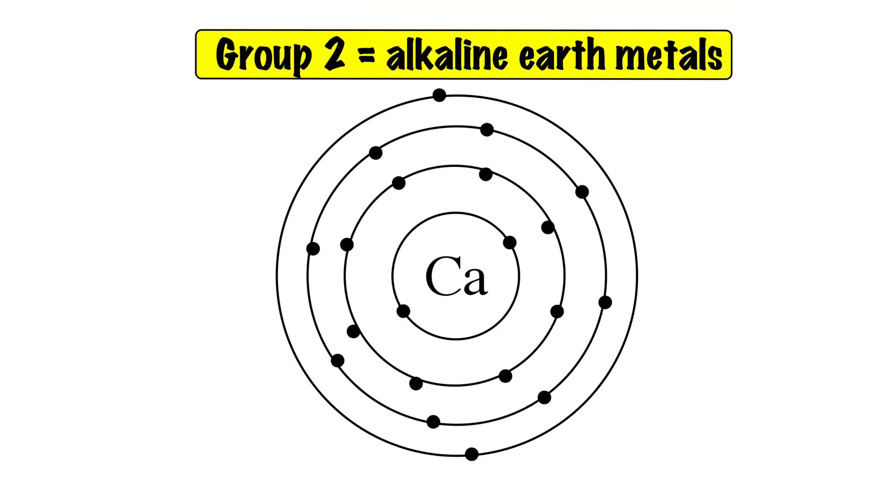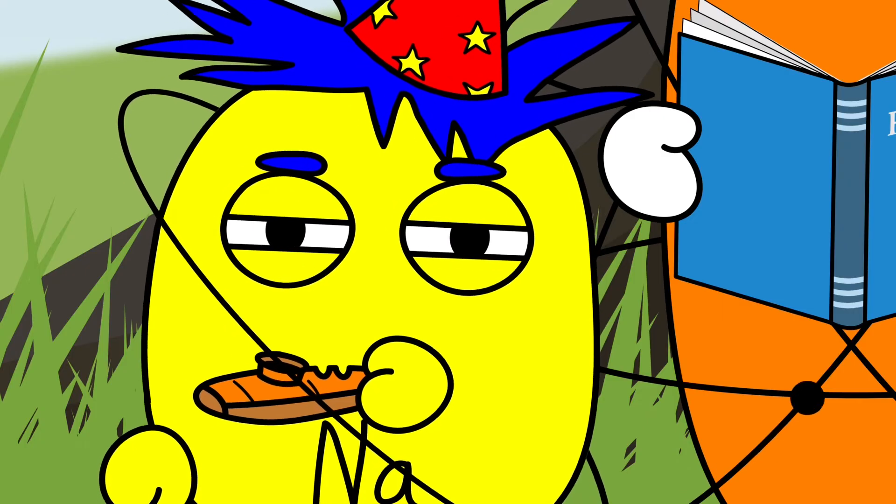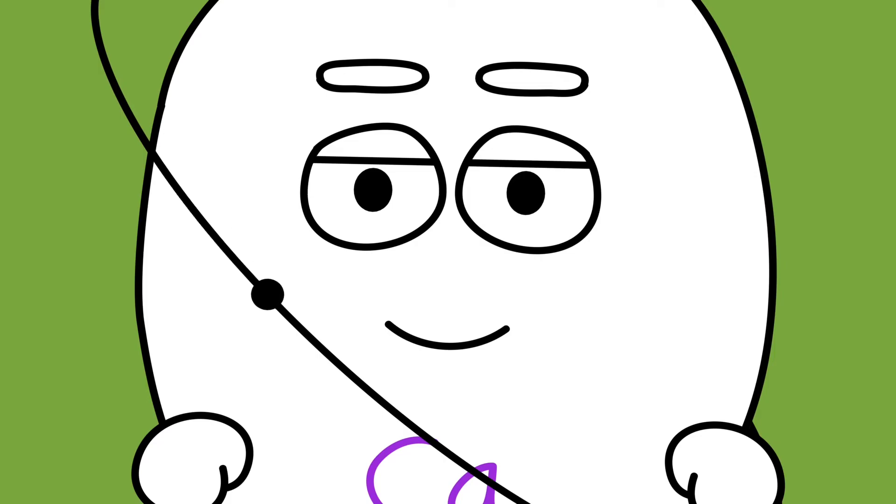By the way, group 2 comprises the alkaline earth metals, also sometimes volatile, but not as much as group 1. Yeah, Kel, you are a little moody.